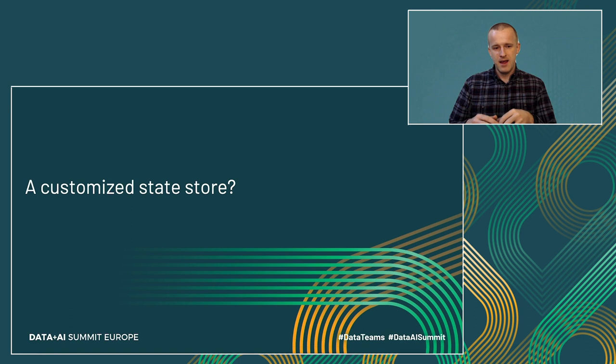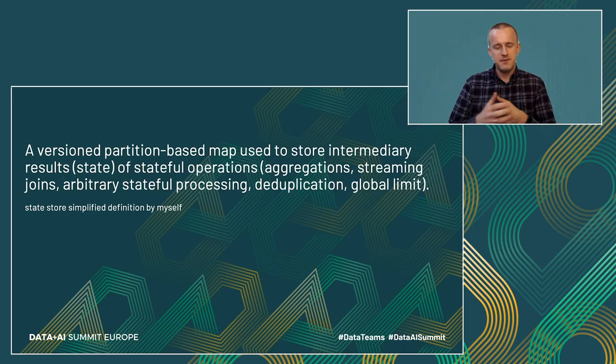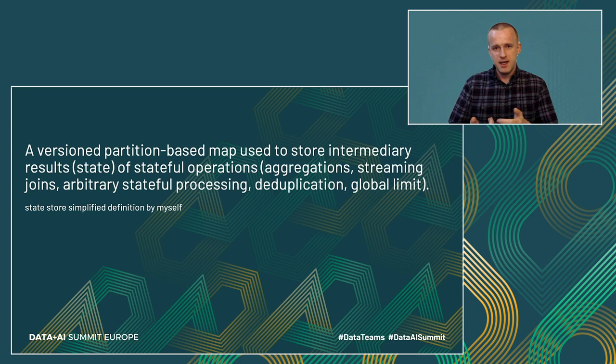So what does a customized state store mean and how does it look? To recall, the state store is a versioned hash map which is stored on partitions, partitions that are obviously managed by tasks. The information stored is used by stateful operations like aggregations, arbitrary stateful processing functions, or, which may sound surprising, global limits.